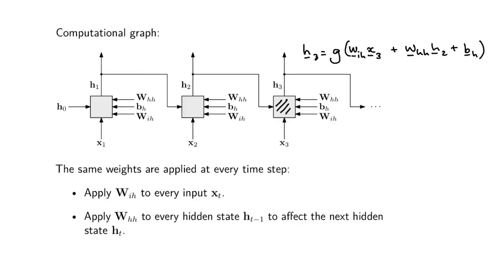What stays the same in each block, and what changes? X3 changes and H1 changes — what stays the same are the weights. So actually this diagram is a little bit incomplete, because really what you have is just one WIH matrix serving as the input here, and that same WIH serves as the input there. The same applies to the bias vector and the HH matrix. You can delete these from the diagram because there's only one WIH that you're going to wiggle in order to get my loss down.